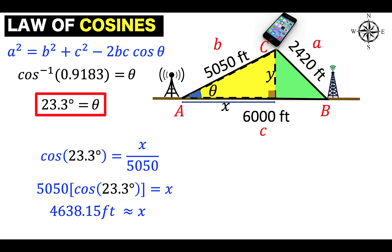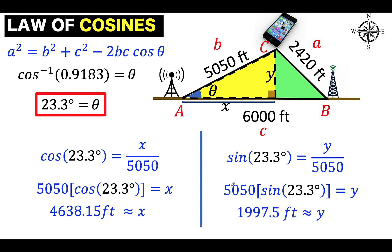Next, to find this height here of this yellow triangle denoted by y, we use the sine function. Sine is opposite over the hypotenuse. So sine of 23.3 degrees is equal to y over 5,050 feet. Multiplying both sides by 5,050 and using calculator to find the value of sine 23.3 degrees and multiply that by 5,050, we have y to be approximately equal to 1,997.5 feet.